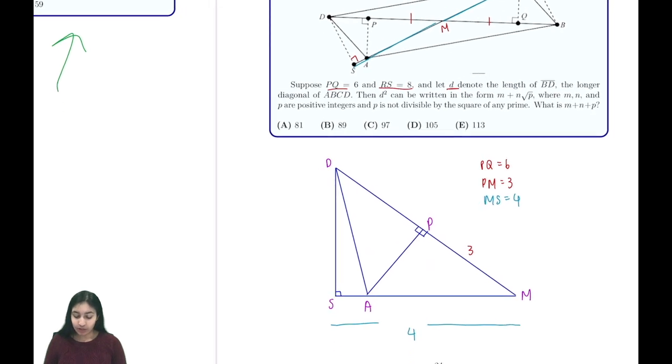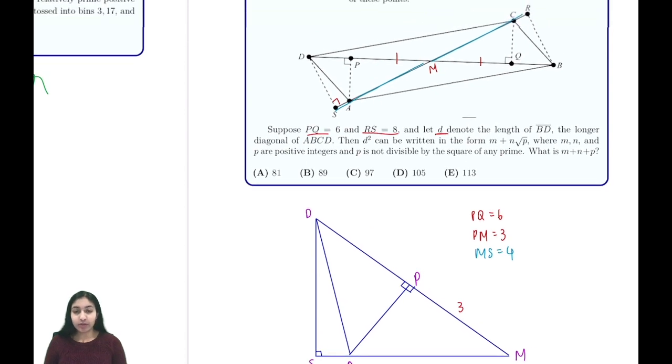Now that we have these pieces of information, we know that the area of the parallelogram is 15. The area of triangle AMD is going to be one-fourth of that, since the height of the triangle is the same as the parallelogram, but the base is half. So the area of triangle AMD is 15 over 4.